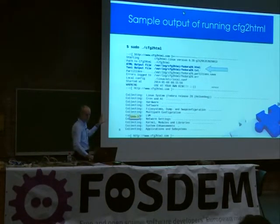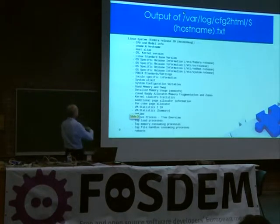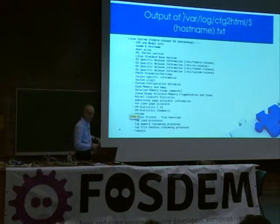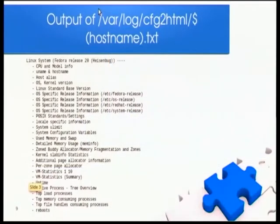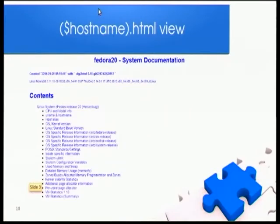This is a text file example — you can see the screen is a bit small. It shows on top of the header just some of what it will collect. And the next screen is the HTML view, and that is linkable, so you can really click on it and it jumps to the section where it collected the output from.